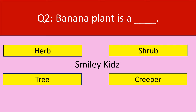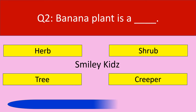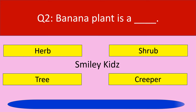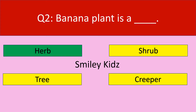Question number 2. Banana plant is a — herb, shrub, tree, or creeper. Your time starts now. The correct answer is herb. Banana plant is a herb.